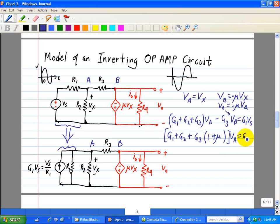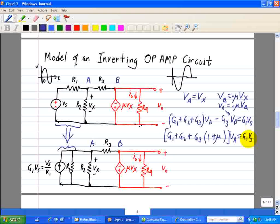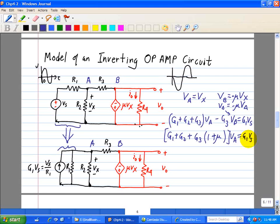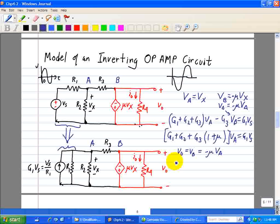and that's equal to G1 times Vs. Now we want a relationship between V0 and our input Vs. But we note that V0 is equal to Vb, which is equal to minus mu Va.